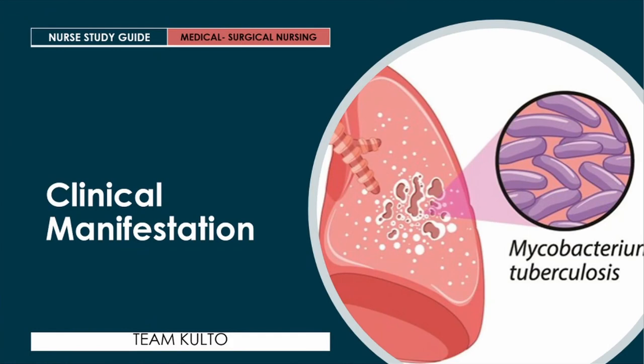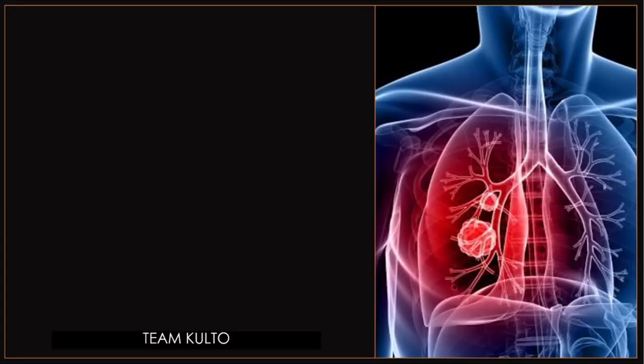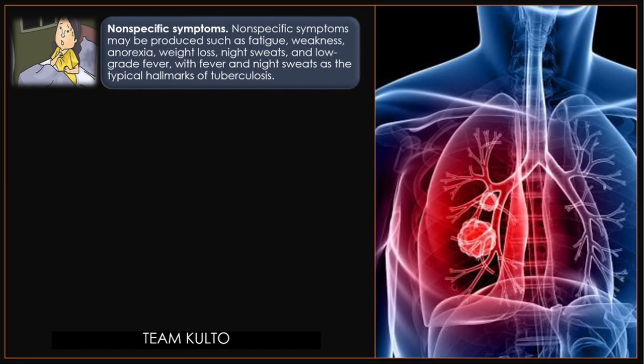Now let's proceed — what are the clinical manifestations of tuberculosis? After an incubation period of 4 to 8 weeks, TB is usually asymptomatic in primary infection. However, non-specific symptoms may be produced such as fatigue, weakness, anorexia, weight loss, night sweats, and low-grade fever — with fever and night sweats as the typical hallmarks of tuberculosis.